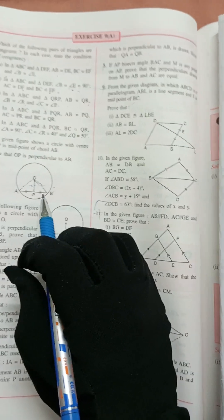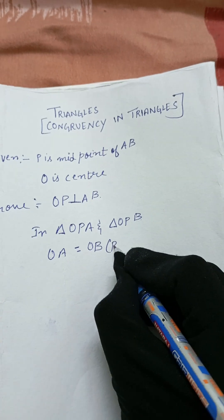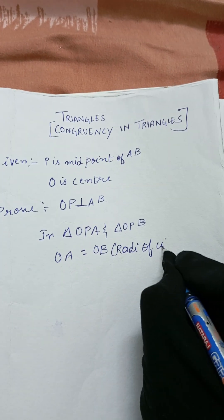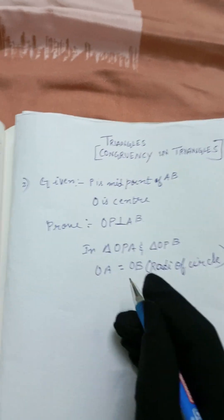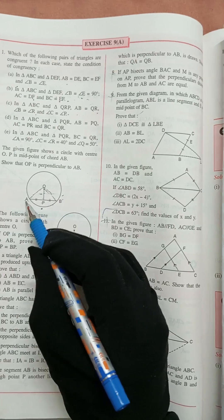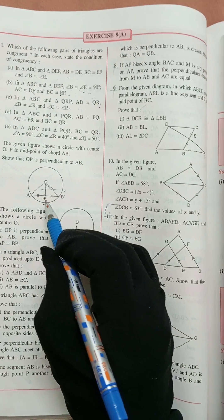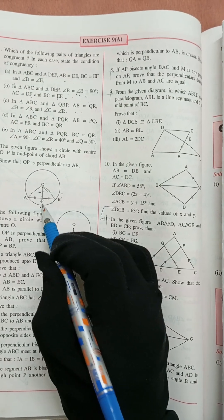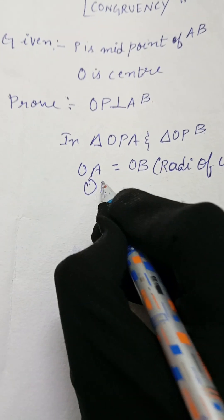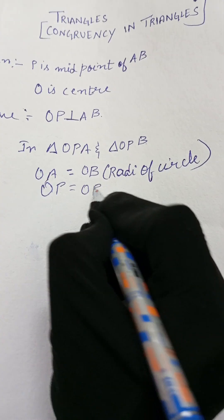So we write: OA = OB, which are radii of the circle. Next, OP is equal to OP — OP is common to both triangle OAP and triangle OBP.